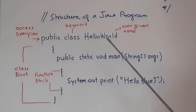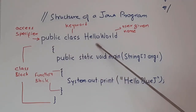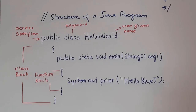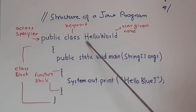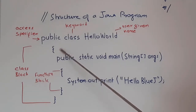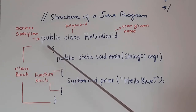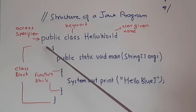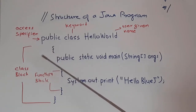Now let us start the program. 'Public class HelloWorld' defines a class here. Public is called the access specifier, class is our keyword, and HelloWorld is the user-given name. You can decide what name you want to give to the class. We create an opening brace and a corresponding closing brace — from opening brace to closing brace is the class block. Java programs usually use indentation so that you can recognize these blocks easily.